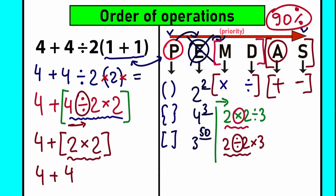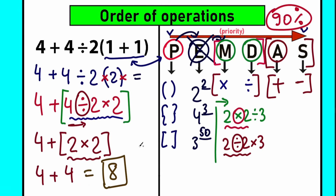We've completed the multiplication and division part. Now we only have addition, which is our last step. When you have addition as the last step, it's great because you don't need to worry about order anymore. So 4 plus 4 equals 8. This is our correct answer to this question.